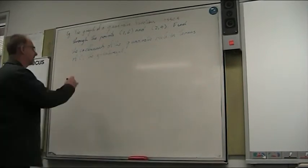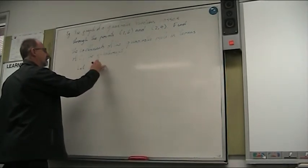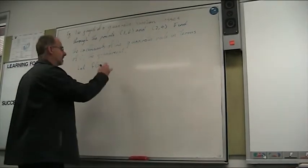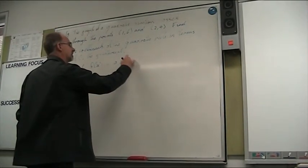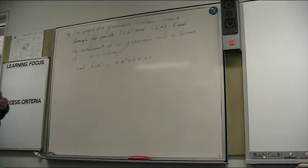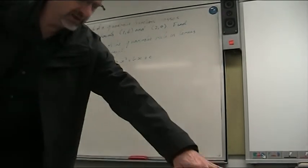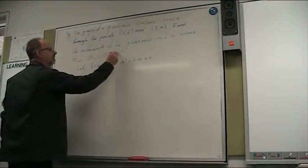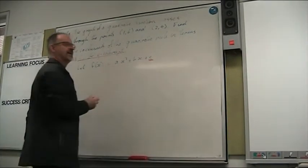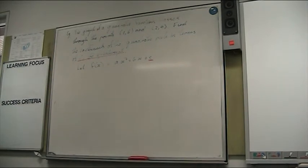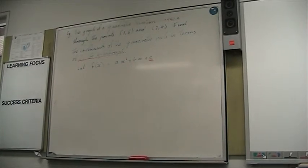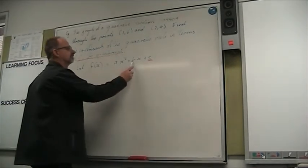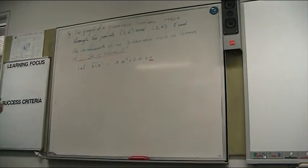All right. So in this one here, we're told about a quadratic function. So a quadratic function, I'll write it in function notation. In expanded form, it would be ax squared plus bx plus c. Now, the reason that I have chosen to write it in expanded form is that we were asked to find the coefficients in terms of c, the y-intercept. And so that's this on the end there. That's why I've written it like that.